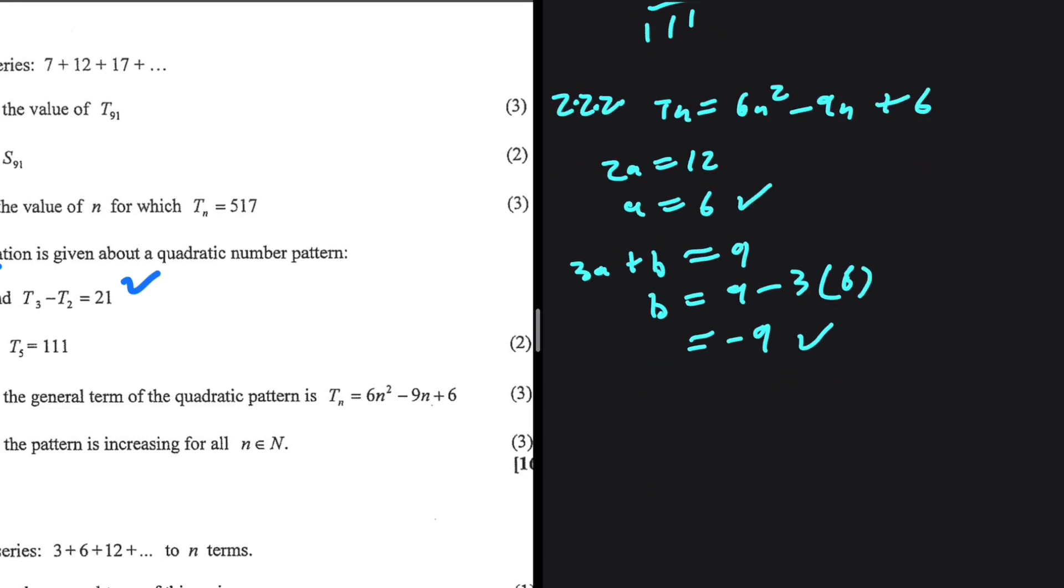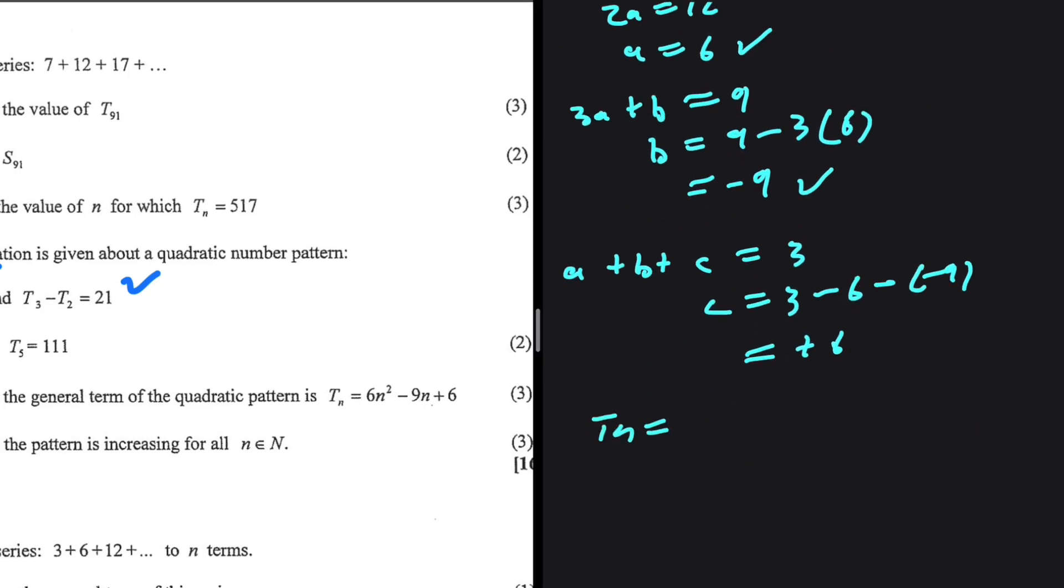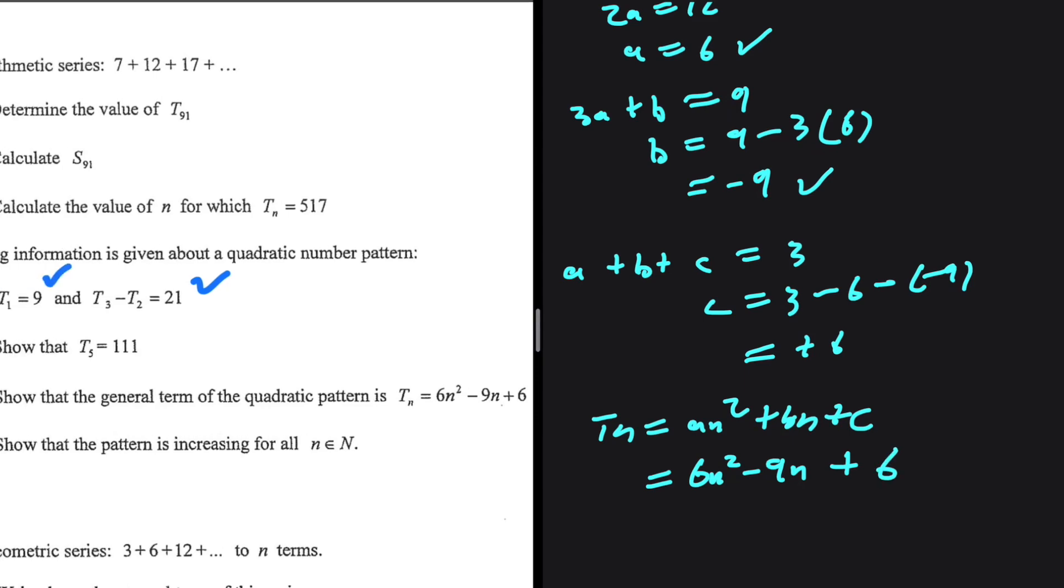So we have a, we have b. Let's go ahead and find c. a plus b plus c equals 3. So c will be equals to 3 minus a, which is 6, minus b, which is minus 9. So we have 3 minus 6, which will give us minus 3. And then minus 3 minus minus 9 will give us plus 6. So Tn equals an squared plus bn plus c. a is 6. So 6n squared plus bn, minus 9n plus c, which is 6. So that is the quadratic pattern.